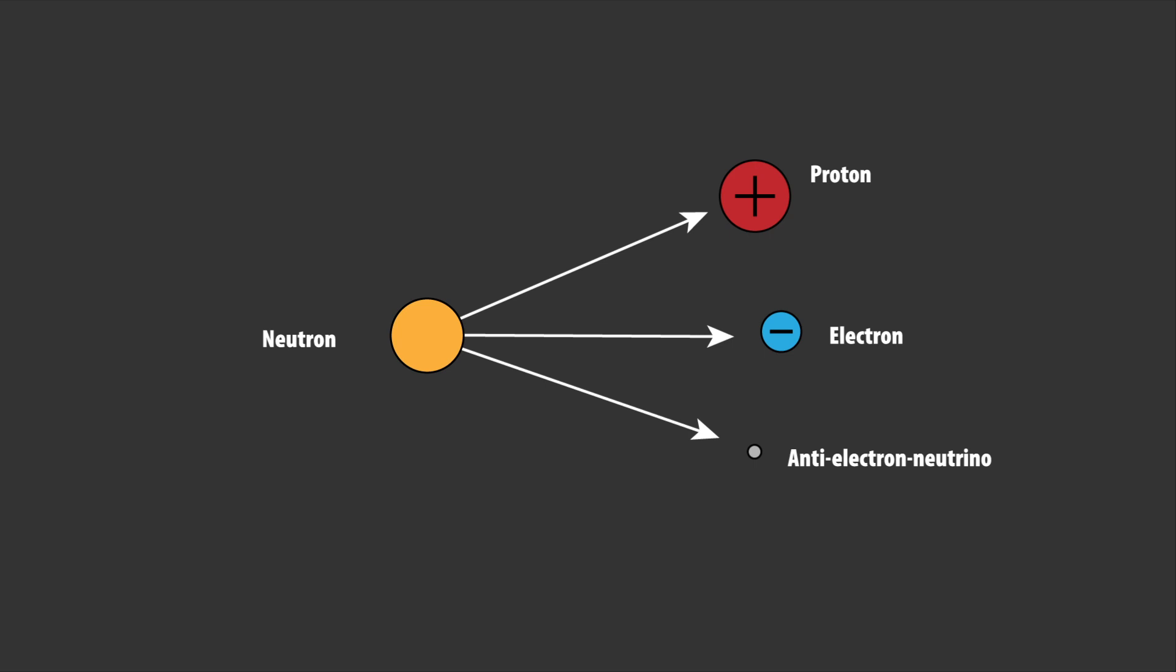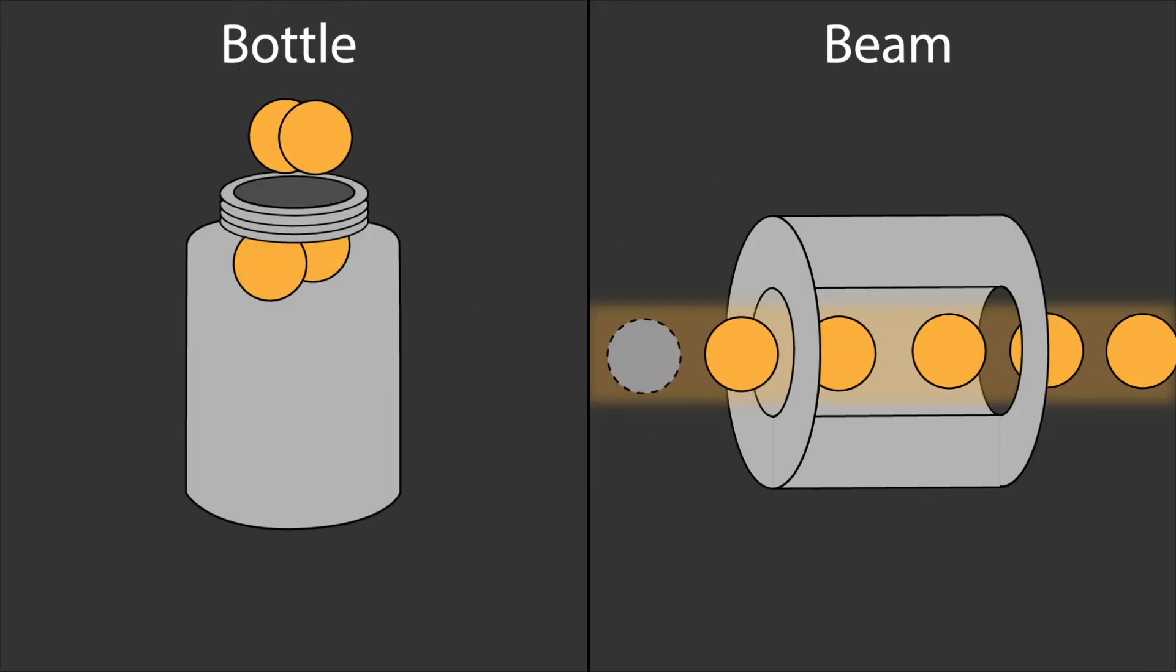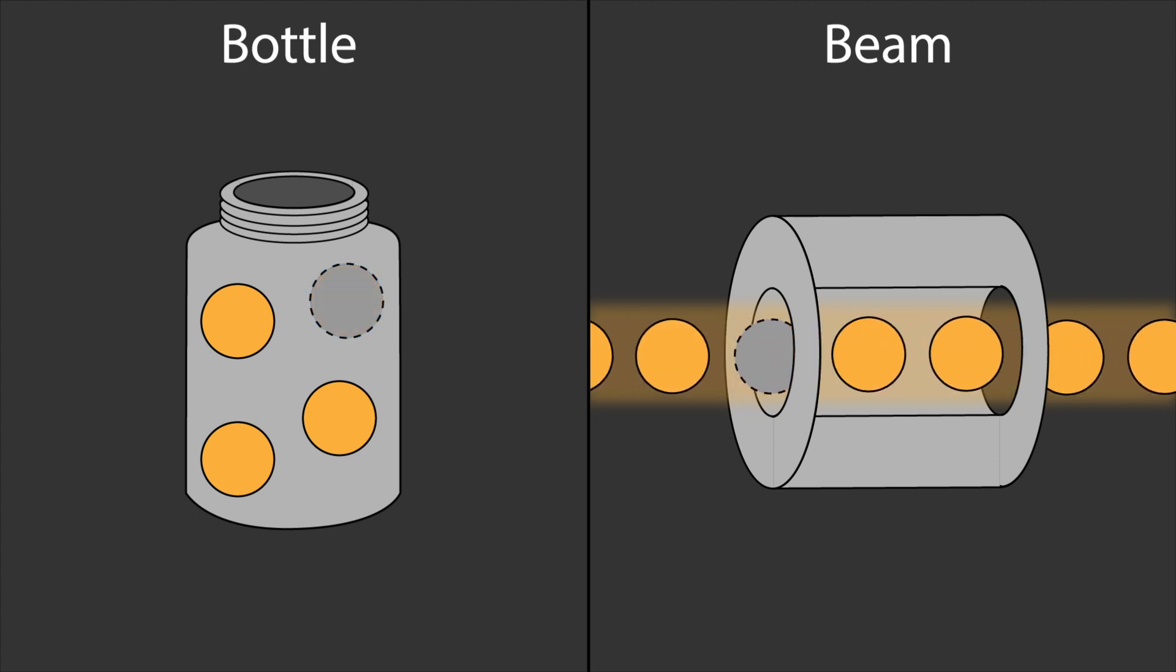Maybe some of the time neutrons decay to a type of particle that is very difficult to detect, that being dark matter. If neutrons did sometimes decay to dark matter, then this could explain the difference, as the bottle method measures the number of neutrons, while the beam method measures the number of protons. Thus, the beam method may miss some of the neutron decays. This would be very interesting if this turned out to be accurate.